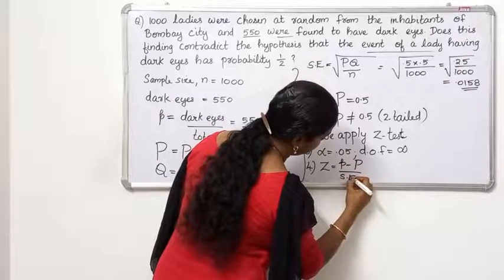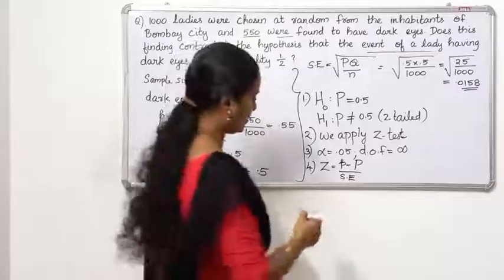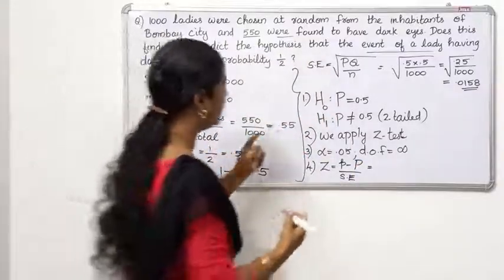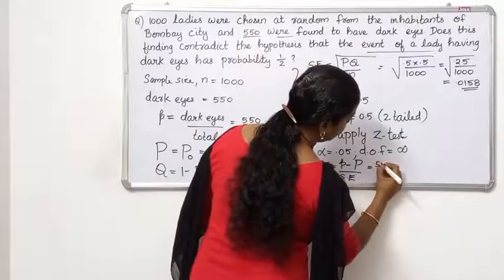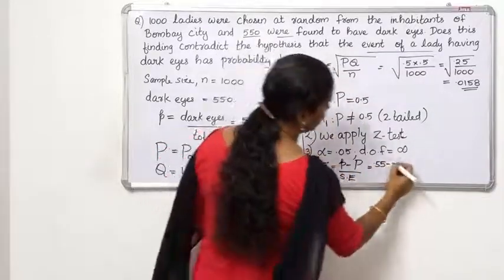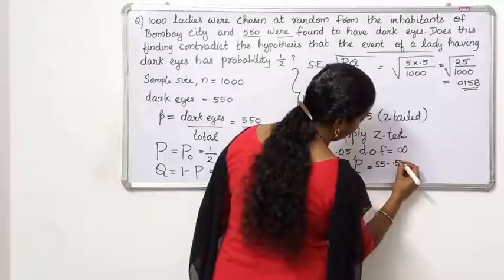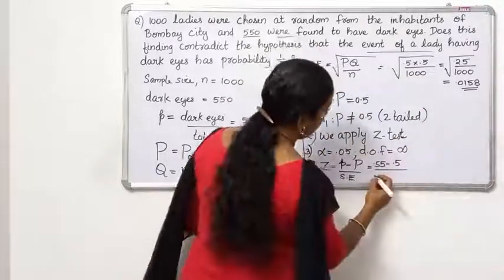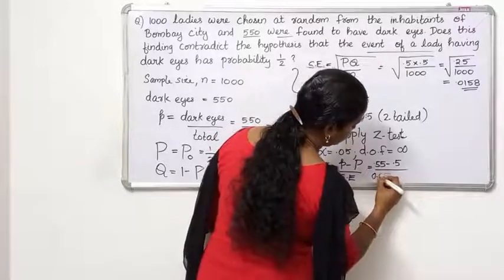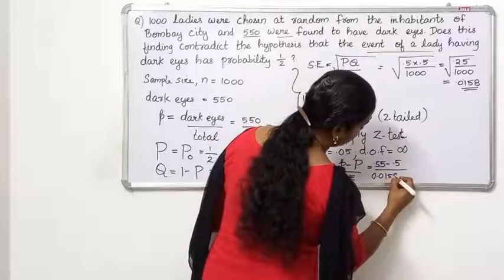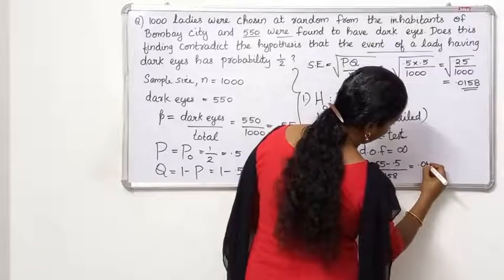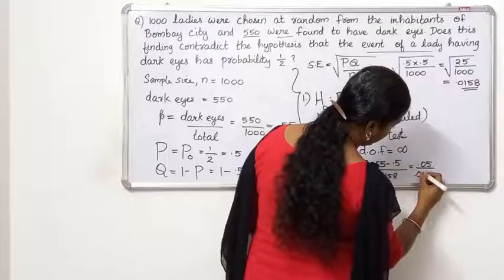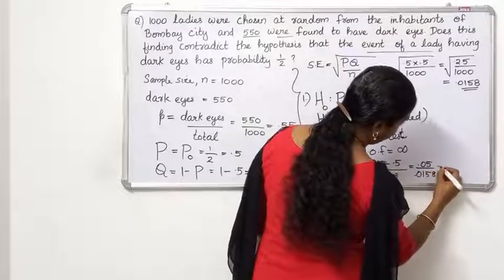The test statistic Z equals small p minus capital P by standard error. The sample proportion is 0.55, capital P is 0.50, and the standard error is 0.0158. So Z equals 0.05 by 0.0158.